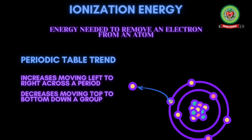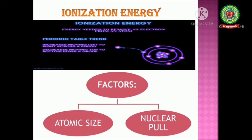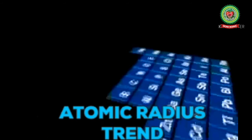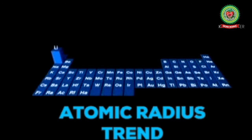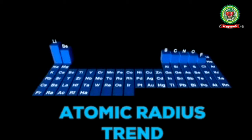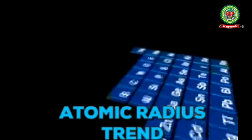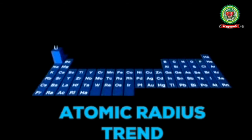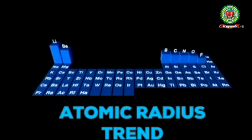Ionization energy depends upon two factors. First one is atomic size, and second one is nuclear pull. The greater the atomic size, the lesser the force of attraction, so it is easy to lose an electron, hence less ionization energy is required. The greater the nuclear pull, the more difficult it is to lose an electron, so more energy is required and ionization energy will be more.